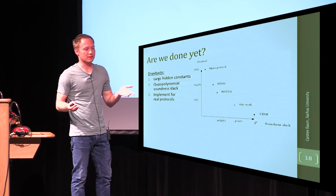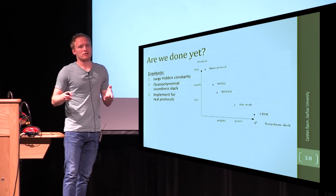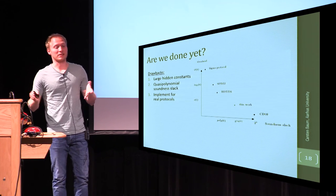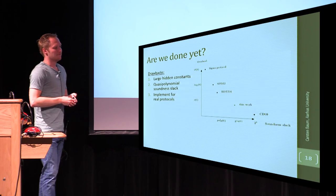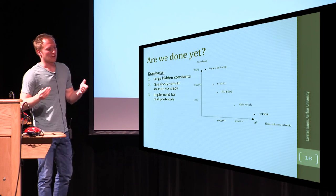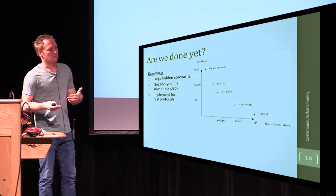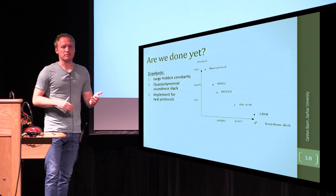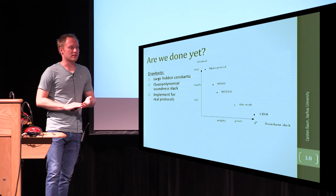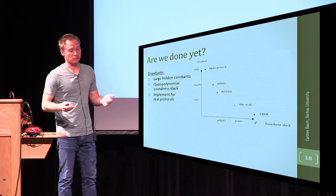The question is, of course, are we done yet? First of all, our analysis comes with large hidden constants. I mean, it's super-polynomial, and the number of auxiliary values is constant, but it's a big constant. So one would, if you want to apply this in practice, definitely like to get these hidden constants smaller. Moreover, we have this quasi-polynomial soundness slack, and getting this down to something that's polynomial or linear would definitely be desirable. And also, it would be nice to see whether this actually works, and how it performs in practice.